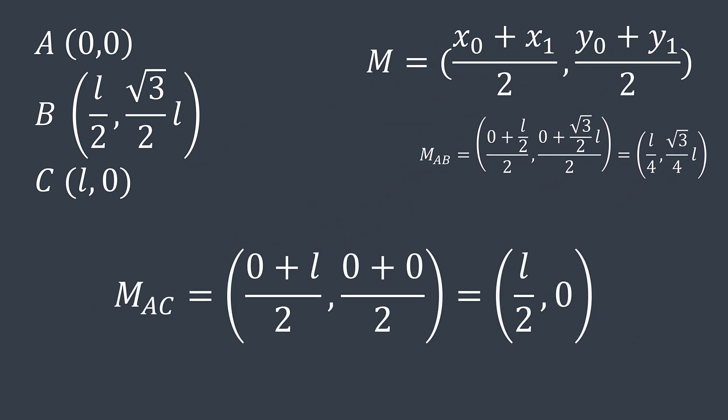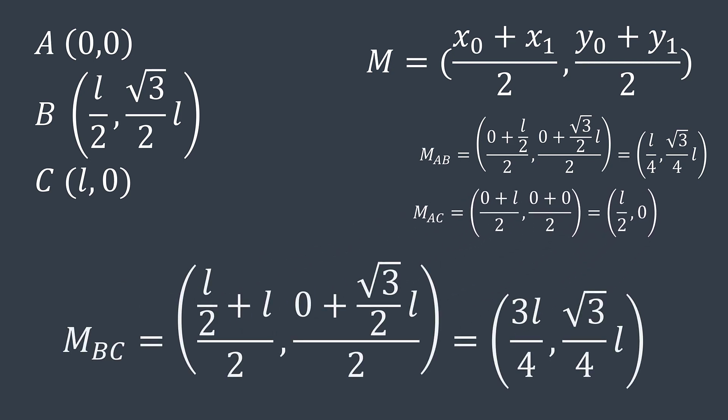A is at zero zero and C at L zero. So the midpoint is L divided by two zero. Last line between B and C, we'll get three L divided by four, square root of three divided by four times L.